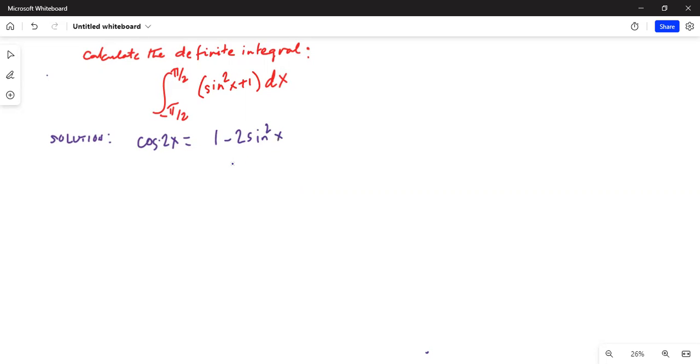So if we add 2 sine square x on both sides, we get 2 sine square x plus cosine 2x is equal to 1. Now, we will subtract cosine 2x from both sides and we get 2 sine square x is equal to 1 minus cosine 2x. So sine square x equals 1 minus cosine 2x divided by 2.